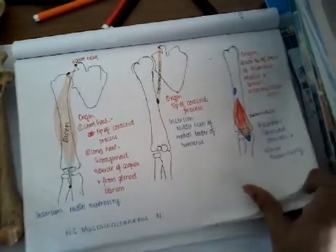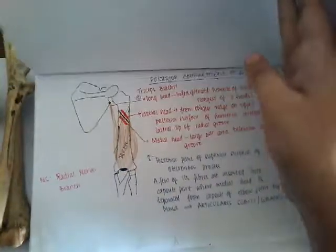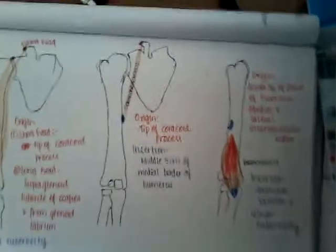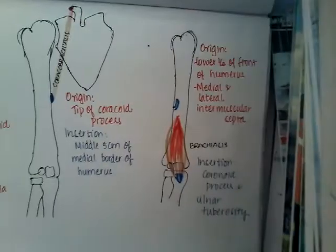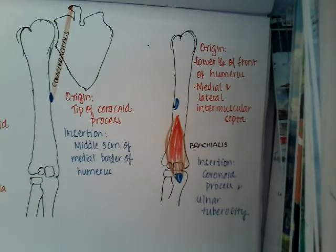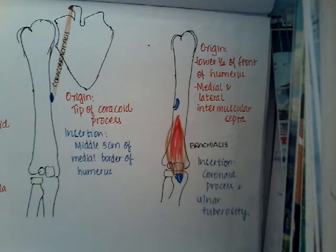So those are the origins and insertions of the muscles of the anterior compartment of the arm, and the main nerve supply is the musculocutaneous nerve. Thank you for watching. In my next class I will explain the posterior compartment of the arm and the triceps muscle. If you have any doubts, please comment in the comment section. Thank you for watching.